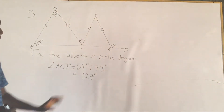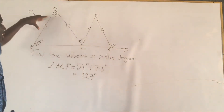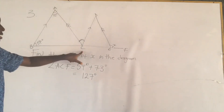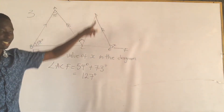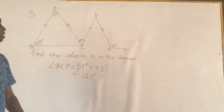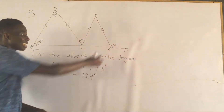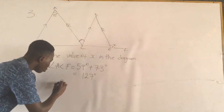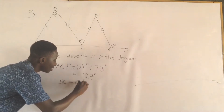And now from here, AC is parallel to DE. Since ACF is parallel to DE, we can say that x is equal to 127 degrees.